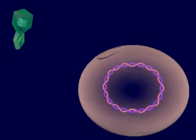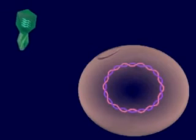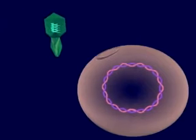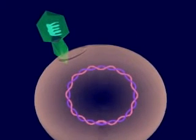In a lysogenic cycle, viral nucleic acid becomes part of the host cell's chromosome and is replicated with it. Eventually, the virus enters a lytic cycle and kills the host cells.